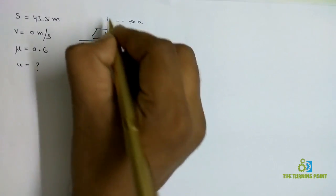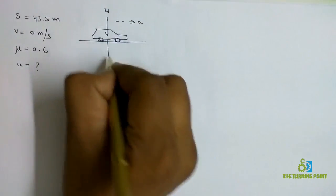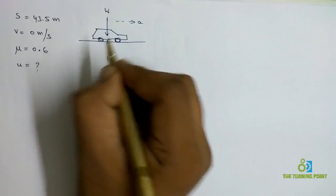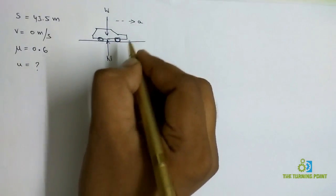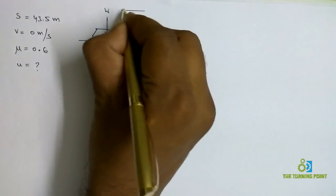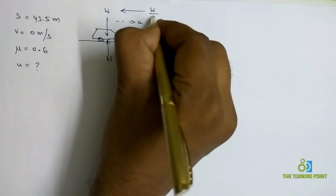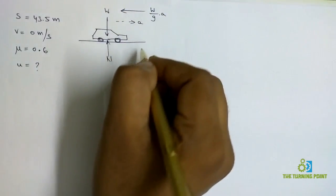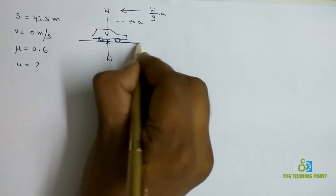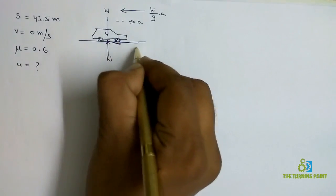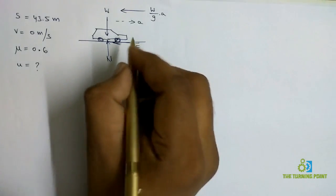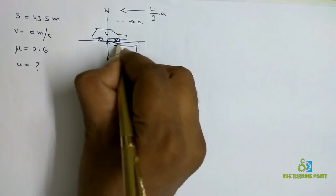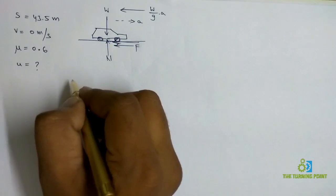When we consider the free body diagram of this one, weight acts vertically downwards, normal reaction for the tires will be like this, and it is accelerating in this direction. In the opposite direction there will be inertia force W/G into A. And at the tires contact there will be frictional force in the opposite direction.